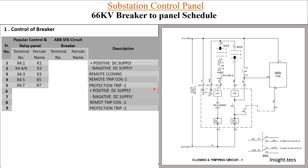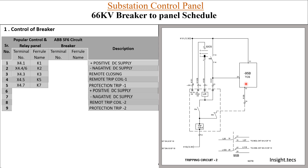For protection trip, the command comes through master relay 86 — the lockout relay. The contact connects at terminal number 7, with ferrule name K7. Now for the second coil: the positive DC supply for coil 2 has ferrule K101, connected at terminal X4, number 9. The negative DC supply for coil 2 is at terminal number 12.